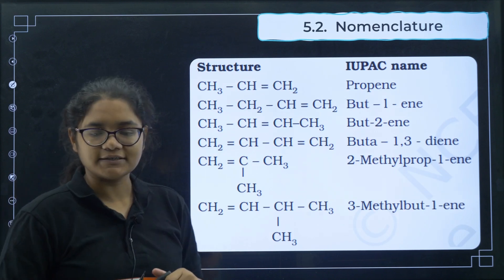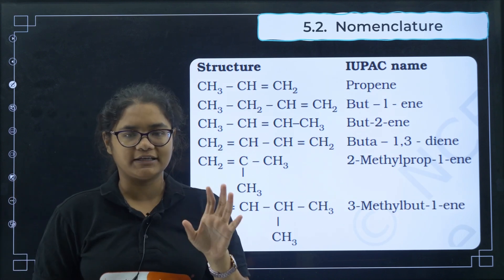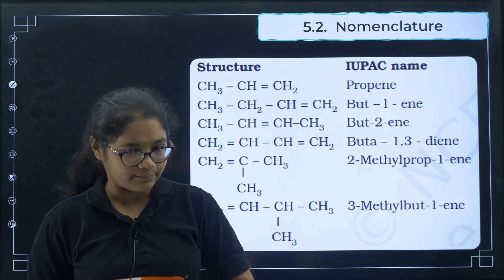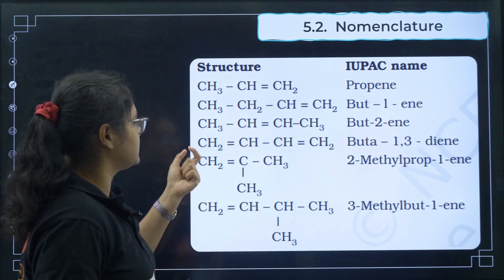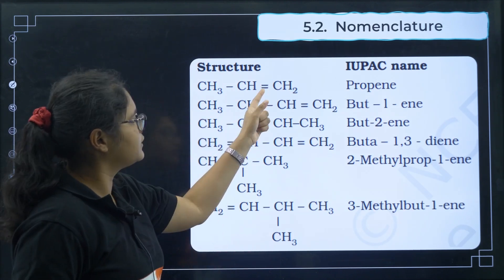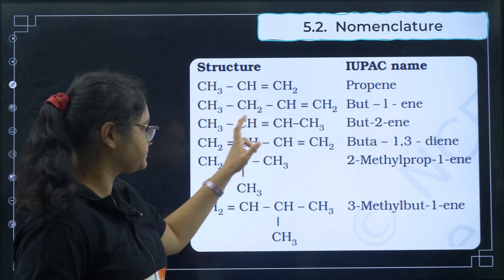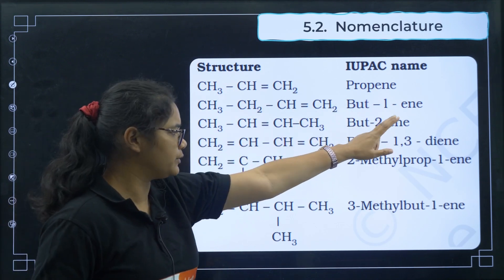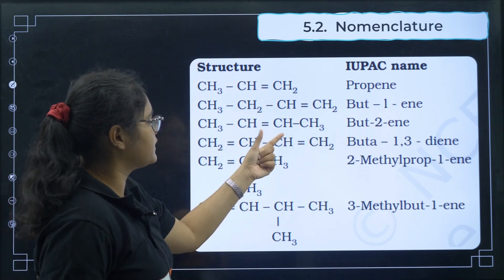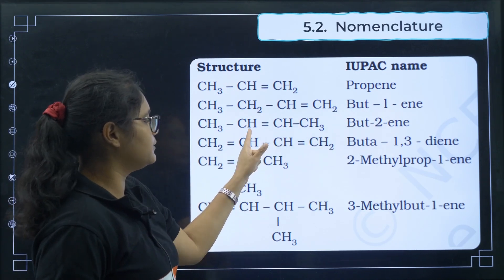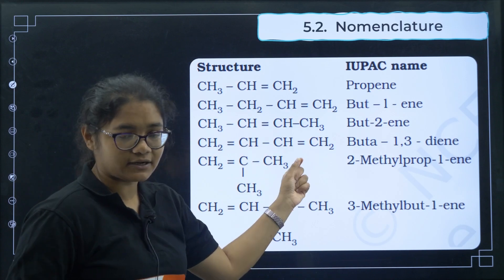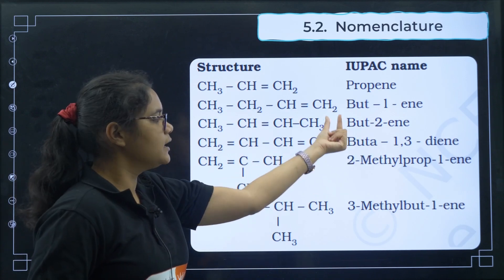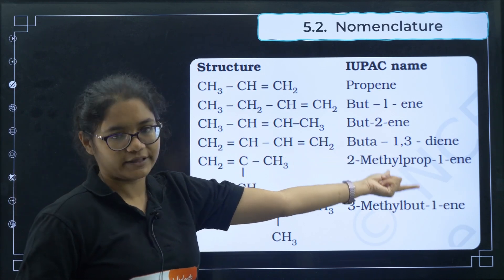Coming to nomenclature: the IUPAC name ends with '-ene.' For example, if you have one double bond, it is propene. For butene, if the double bond is at the second carbon, you must mention the position: but-2-ene.